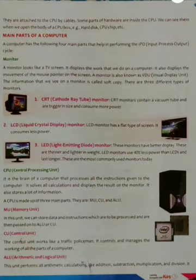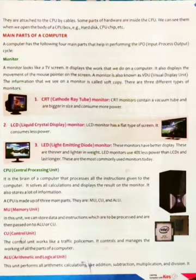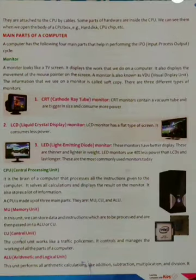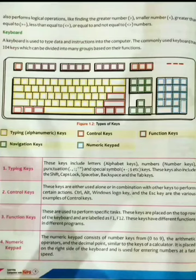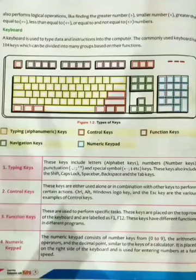The third part is ALU, i.e. arithmetic and logical unit. This unit performs all arithmetic calculations like addition, subtraction, multiplication, and division. It also performs logical operations like finding the greater number, smaller number, greater than or equal to, less than or equal to, equal to, and not equal to numbers. All arithmetic and logical calculations are done in the ALU unit on the instructions passed by the memory unit.